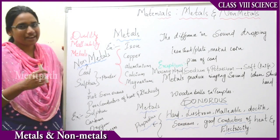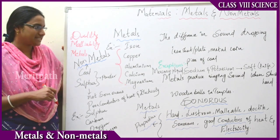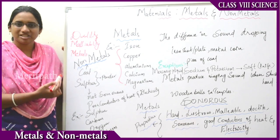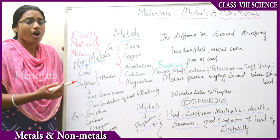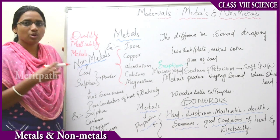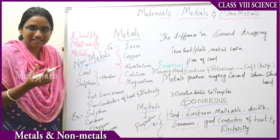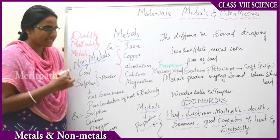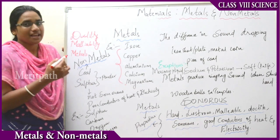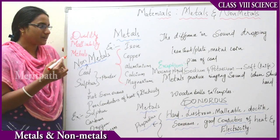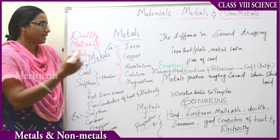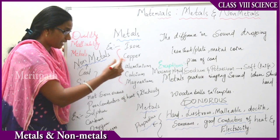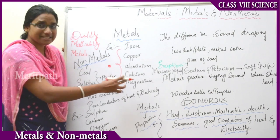Now let us see the different types of metals: iron, copper, aluminium, calcium, and magnesium. All these metals have those properties I mentioned previously — malleability, ductility. These properties are what make these materials metals.